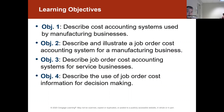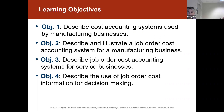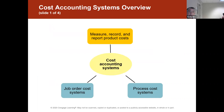Please make sure you read objective number one on your own — what types of cost systems are used by manufacturing businesses, and why would a company use job order costing compared to a process costing system in Chapter 17. The cost system, whether process or job order, is designed to track costs to figure out how much a product cost to produce.